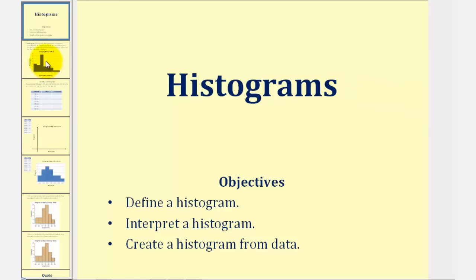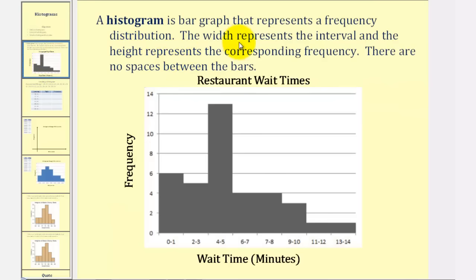Welcome to a lesson on histograms. A histogram is a bar graph that represents a frequency distribution, as we see here below. The width represents the interval, and the height represents the corresponding frequency. Notice there are no spaces between the bars.